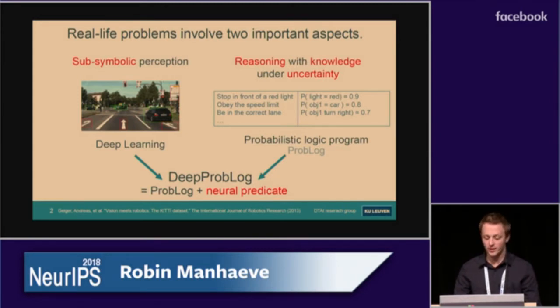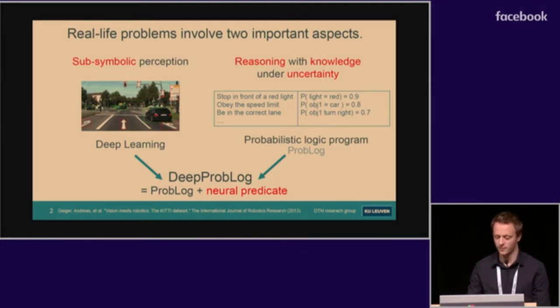On the other hand, you often have to perform reasoning with knowledge under uncertainty, such as knowing that you have to stop in front of a red light but being unsure of what the car next to you is going to do. Deep learning might not be the best thing to use to solve this.